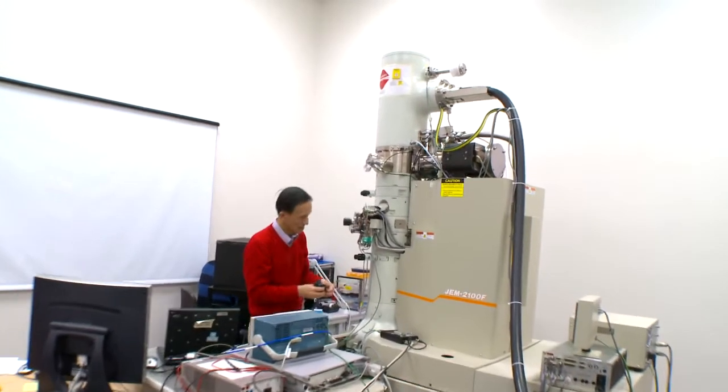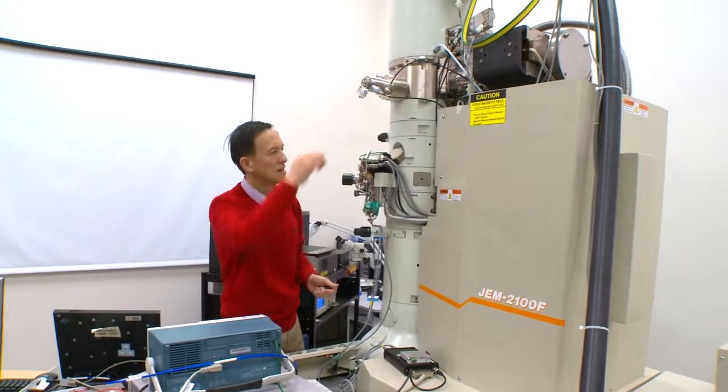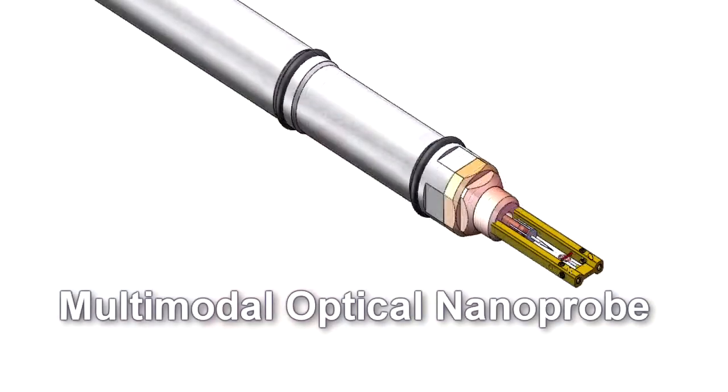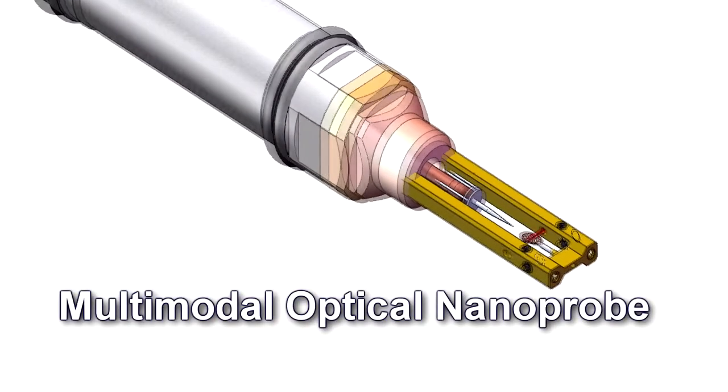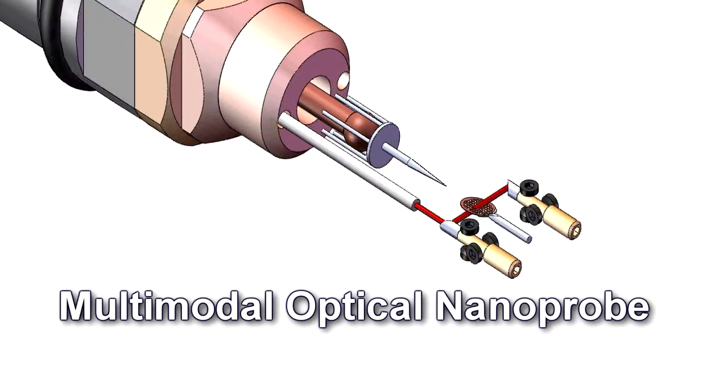Scientists working in Brookhaven National Laboratory's Department of Condensed Matter Physics and Material Science have developed a new transmission electron microscope sample stage that allows researchers to examine nanoscale samples and features in ways never before possible.